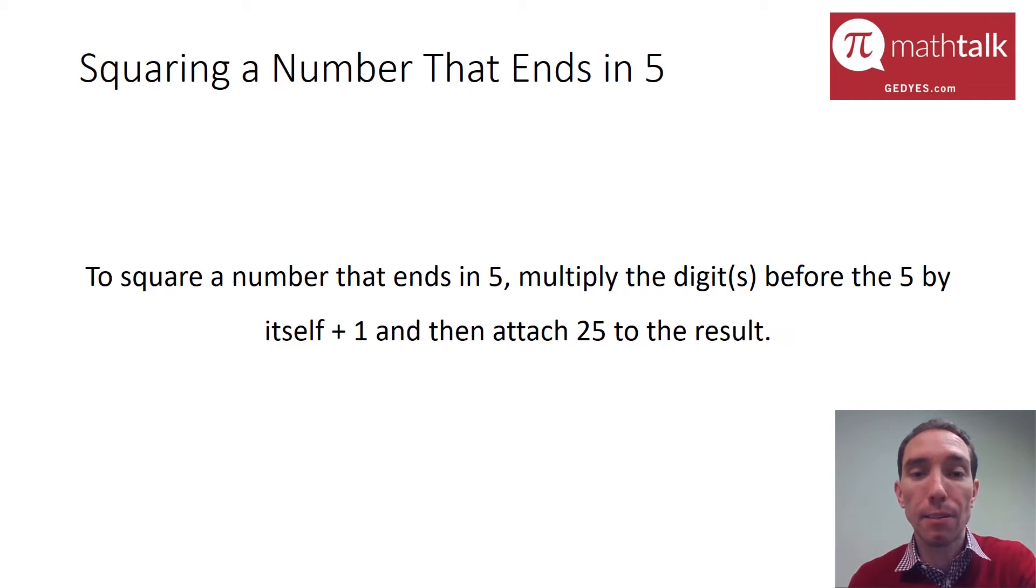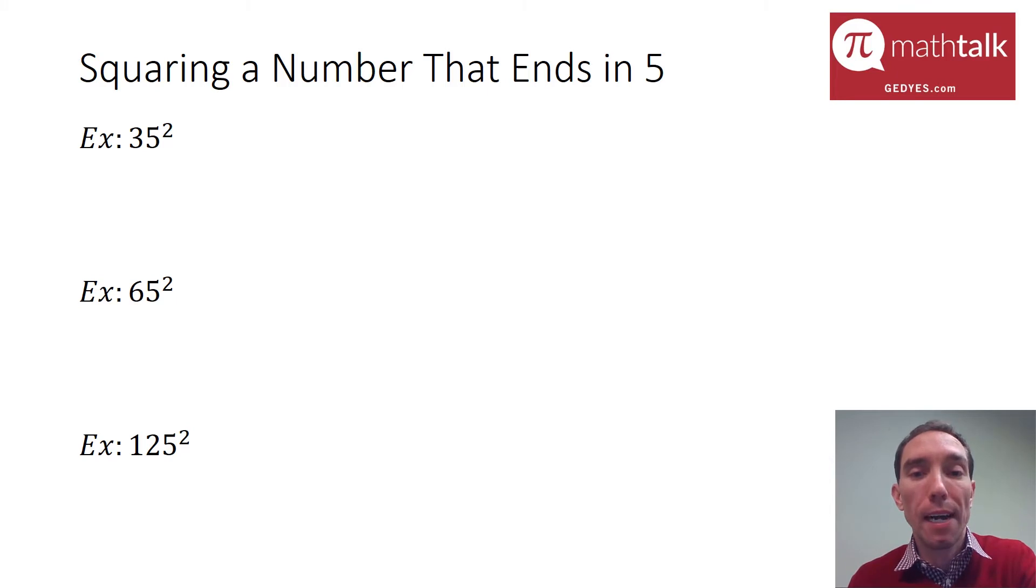Let's say you're asked to find or calculate 35 squared, which is the same thing as 35 times 35. My digit before the 5 is a 3, so I'm going to take 3, multiply it by itself plus 1, which is 4. 3 times 4 is 12, and then I'm going to put 25 at the end of that. So 1225 is 35 squared.